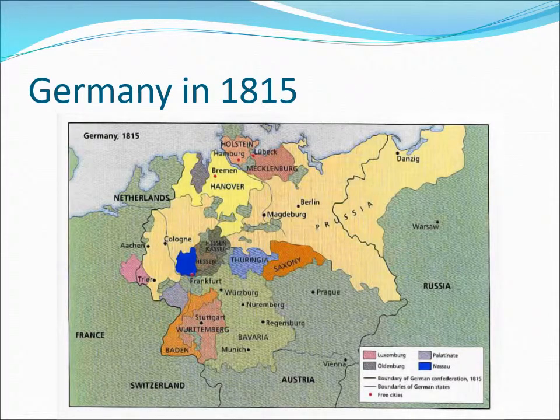Ever since 1815 and the Congress of Vienna, 39 German states had formed a German Confederation. The two largest states, Austria and Prussia, dominated this loose grouping. Austria, earlier the home of the Holy Roman Emperor, was still considered the natural leader of Germany, and Vienna, Austria's capital, was an important cultural center for German music, art, and literature.